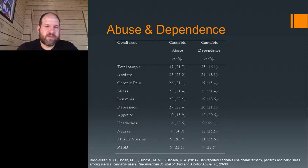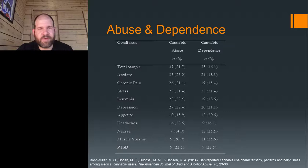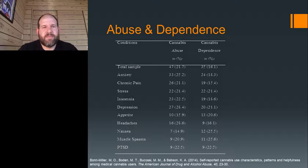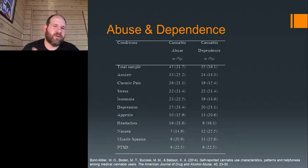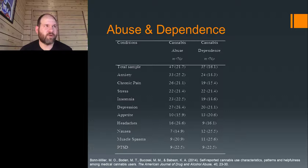We also looked at abuse and dependence — negative consequences as a function of each different condition. A decent number of folks using for anxiety, using for PTSD, and all the way through are meeting diagnostic criteria for substance abuse and cannabis dependence. A lot of people say this isn't a big deal, but it is. While many people might not become dependent, some do — and a lot of people don't even know they can have problems with dependence because they've never tried to quit. Characteristics of dependence include increased tolerance, craving during times of non-use, and withdrawal symptoms when stopping, which can last quite some time.